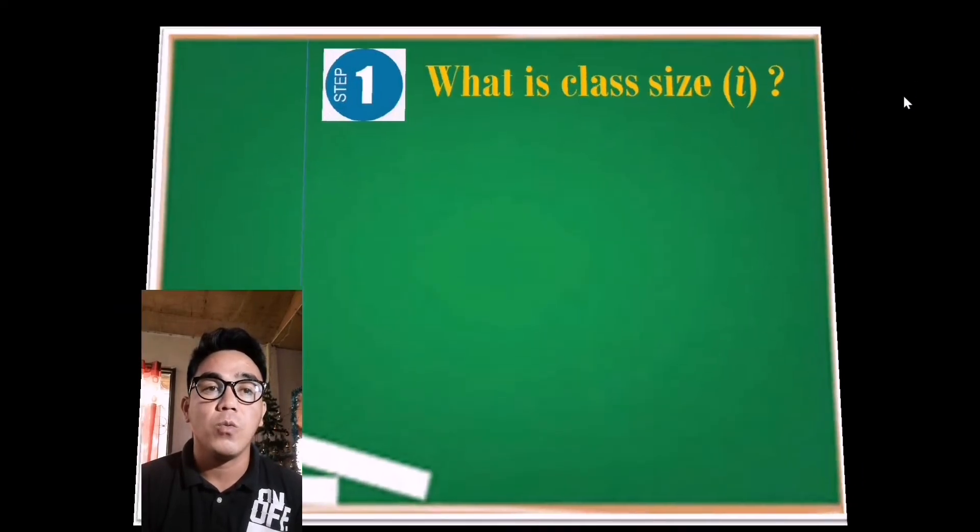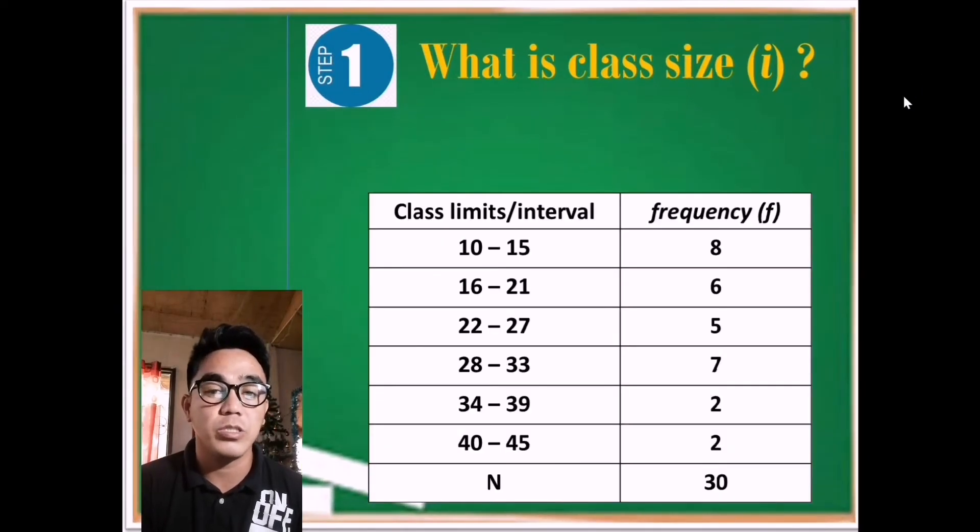First, what is class size which is denoted as small letter i? So as I mentioned earlier, we can easily find the class size by counting it individually from the lower limit to the upper limit: 10, 11, 12, 13, 14, 15. So if we count it, we have 6. So the number of class size is 6.